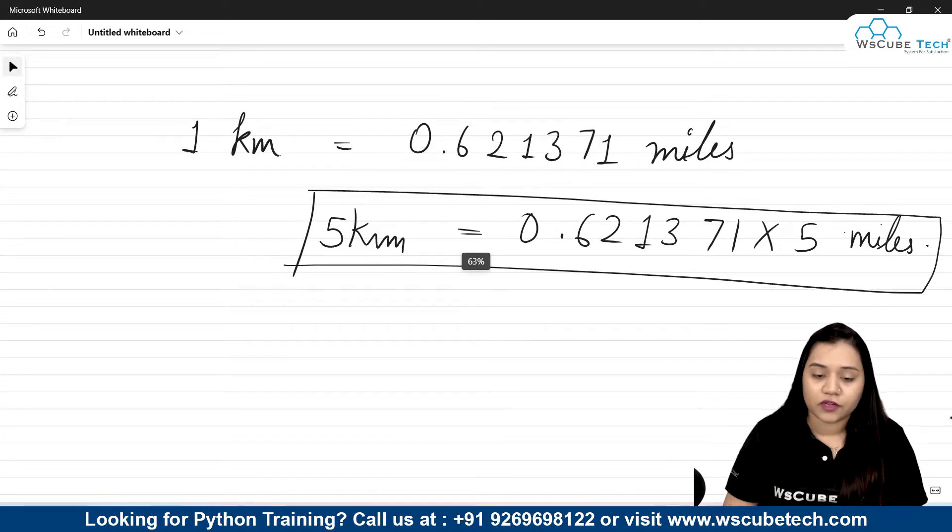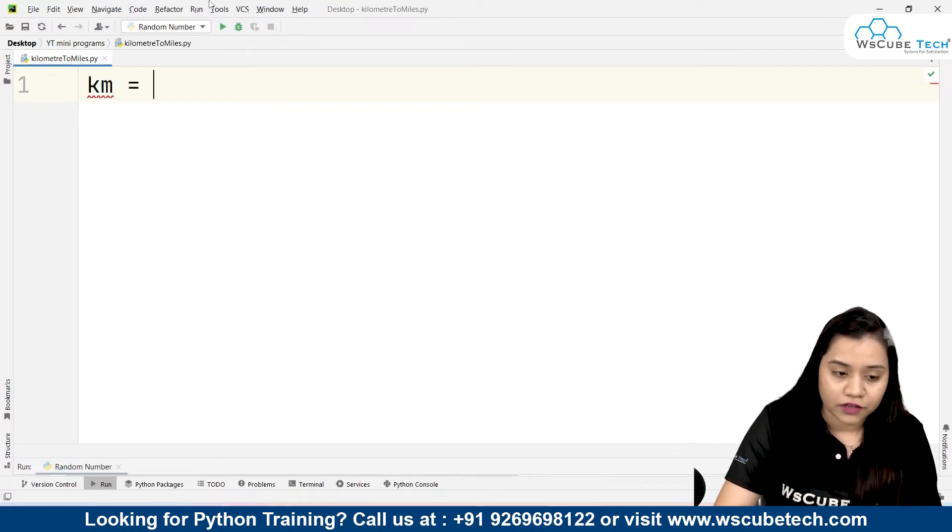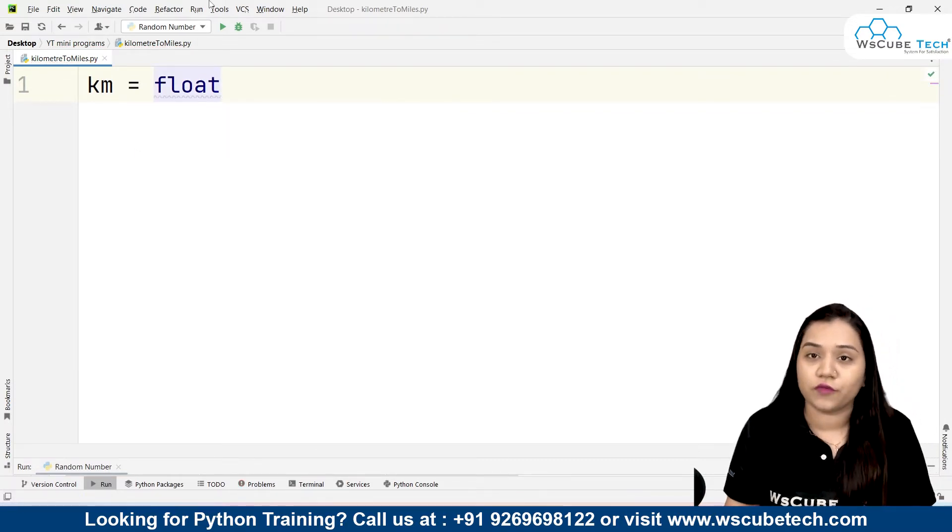Now let's put this formula inside our Python program. First of all, let's take an input from the user for the number of kilometers that they want to convert to miles. So I'll be writing km over here. Now you can give the input in integer or float. We will be using float.